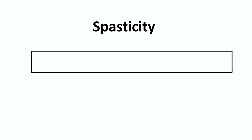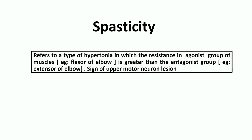Spasticity is a common neurological sign. It refers to a type of hypertonia in which the resistance in the agonist group of muscles — for example, the flexors of the elbow — becomes higher or greater than the antagonist group, like the extensors of the elbow.